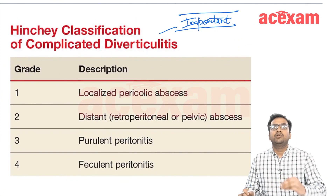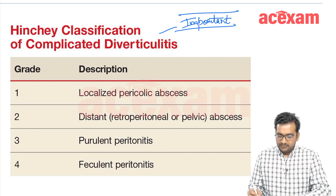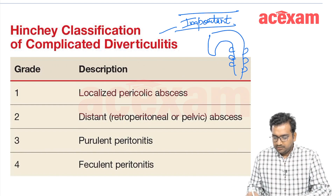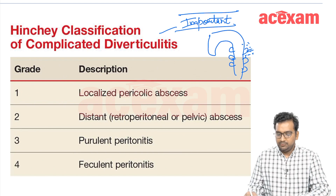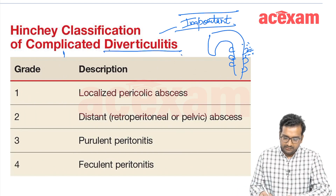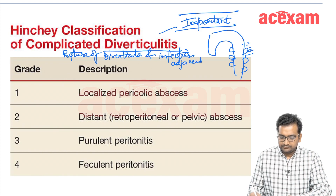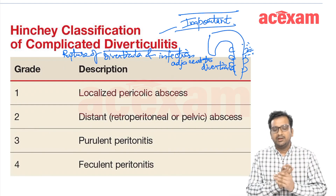This topic is very important — the Hinchey's classification of complicated diverticulitis. In the colon there can be diverticulosis, and rupture of a diverticulum leading to infection adjacent to the diverticulum is known as diverticulitis. Generally, inflammation within the diverticulum is not present; rather, there is rupture of the diverticulum and infection adjacent to it.